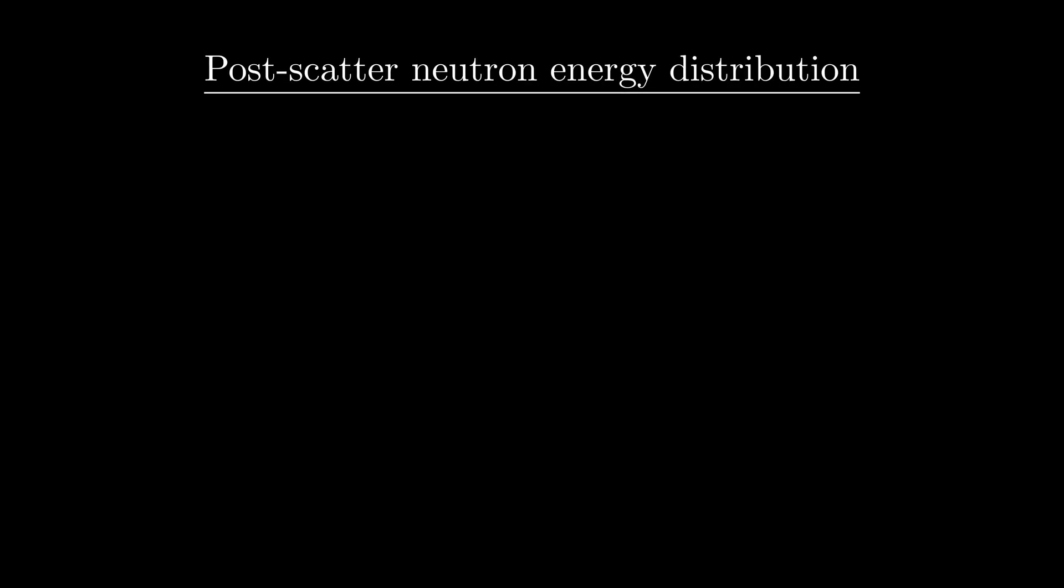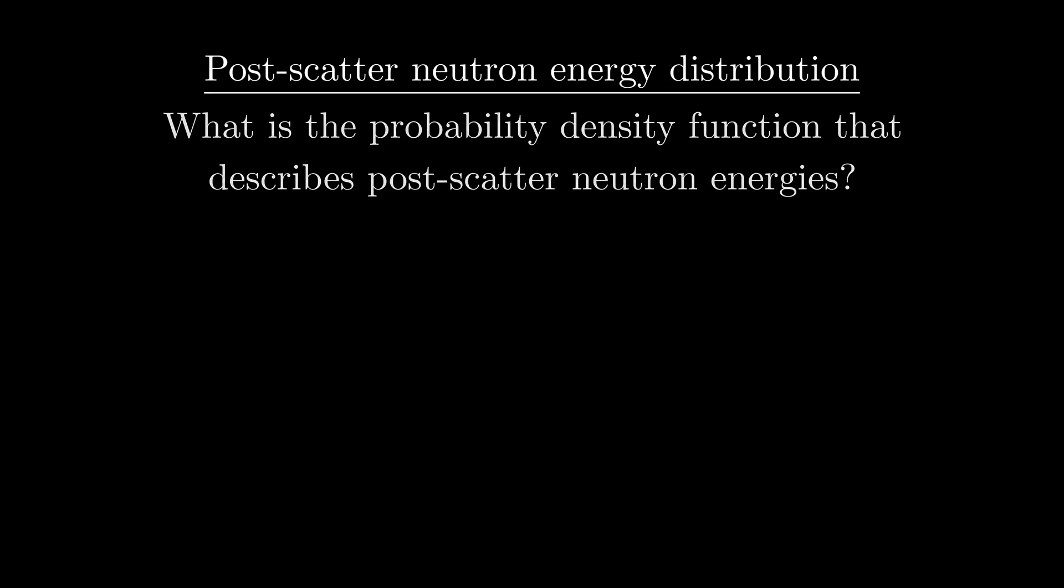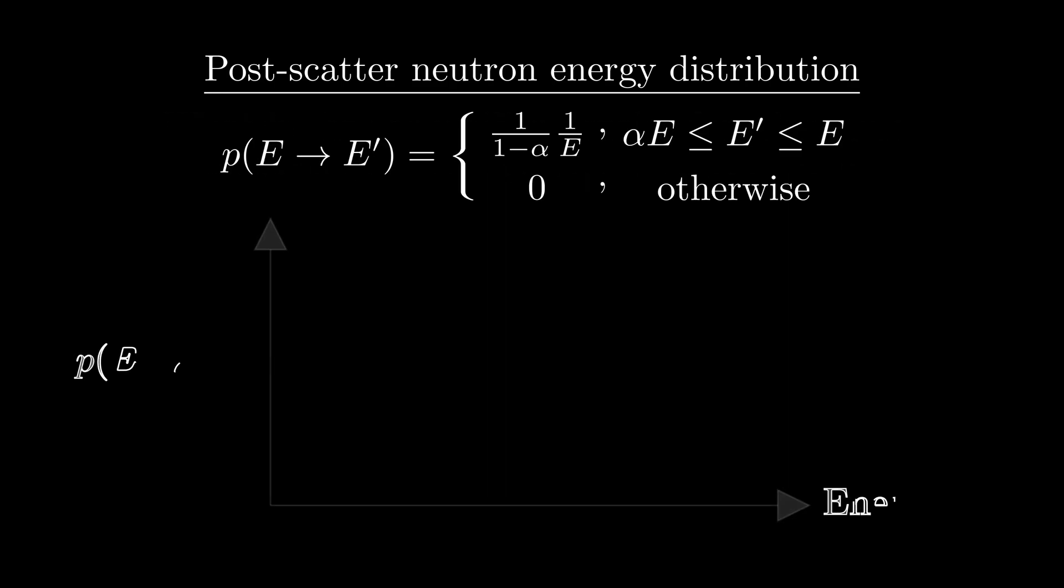So now we know how to calculate the final neutron energy for a given scatter, but what is the probability that the neutron will have any one energy versus another? That is to say, what is the probability density function which describes post-scatter energies? Well it's about as simple as it gets, it's a uniform distribution. For an incident energy E, all post-scatter energies between E and alpha E are equally likely, so the probability density function which describes the probability per energy that a neutron scatters from E to E prime, assuming that Q is 0, can be written as follows.